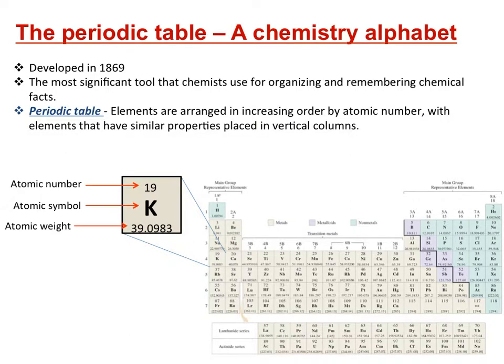Welcome to how to use the periodic table. The periodic table is a chemistry alphabet and one of the most significant tools that a chemist can use. It has a lot of information and gives us a lot of direction.